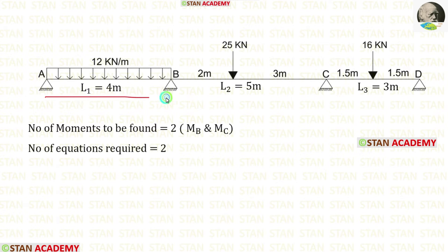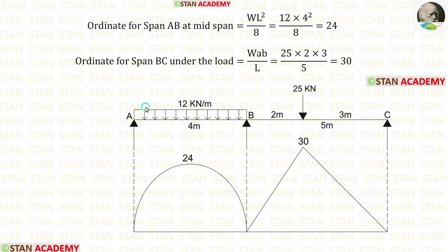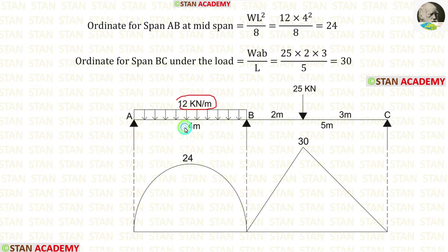Now let us take spans AB and BC and make the first equation. Let us calculate the ordinates and draw the diagram. First, let us calculate the ordinate in span AB. In a simply supported beam, if UDL is acting for the full span, the formula for the maximum bending moment at mid-span is WL²/8. Here W is 12, L is 4. Applying the formula, we get 24.